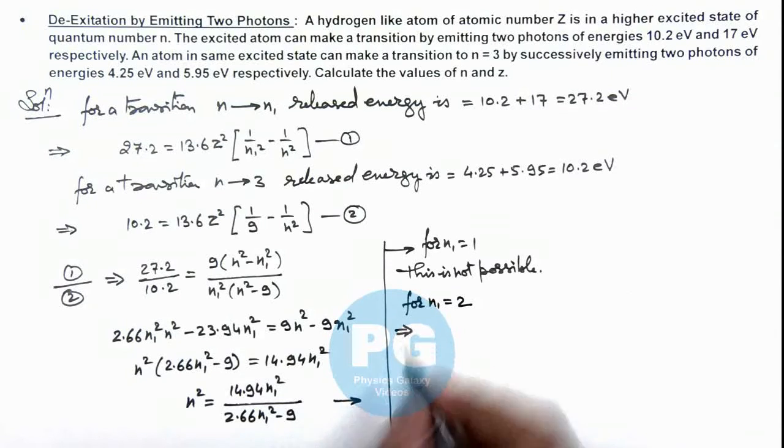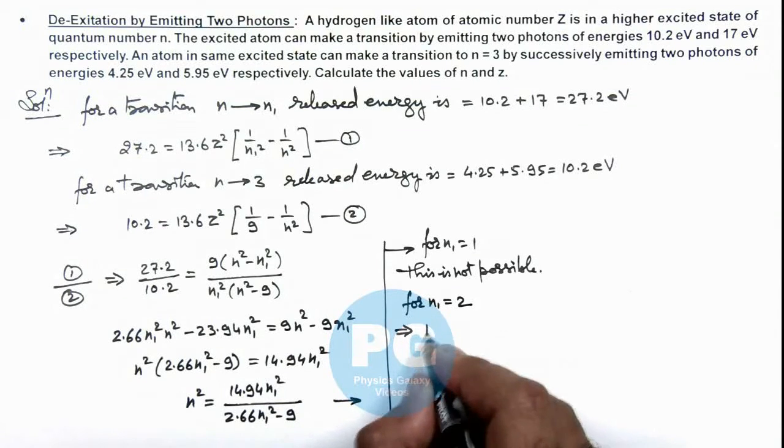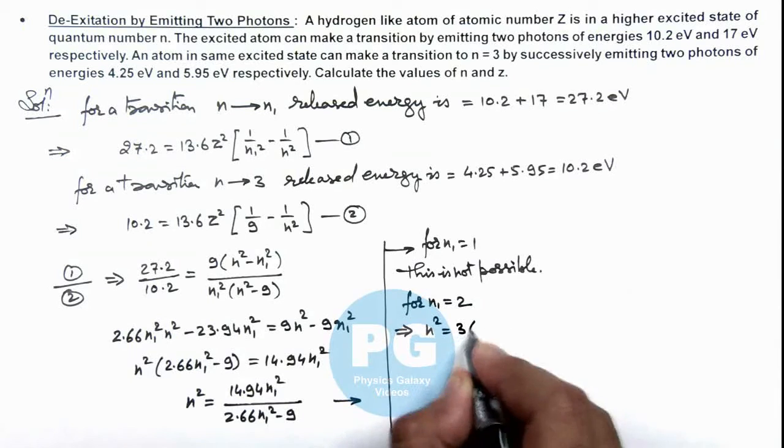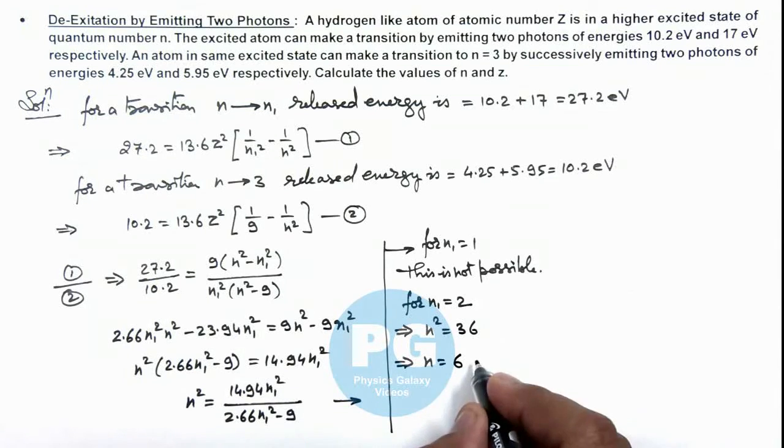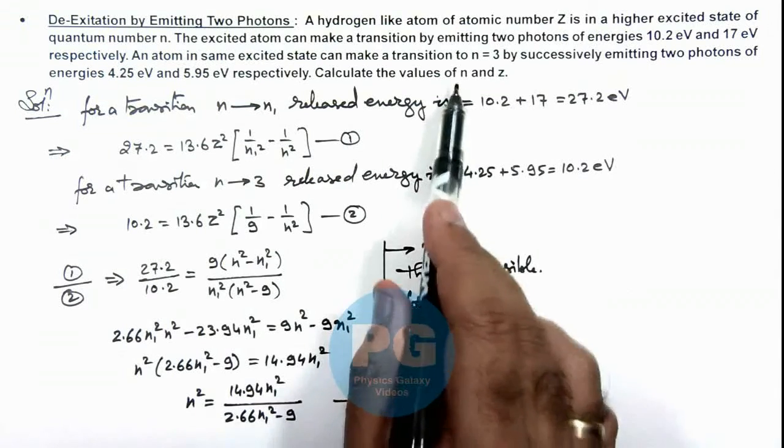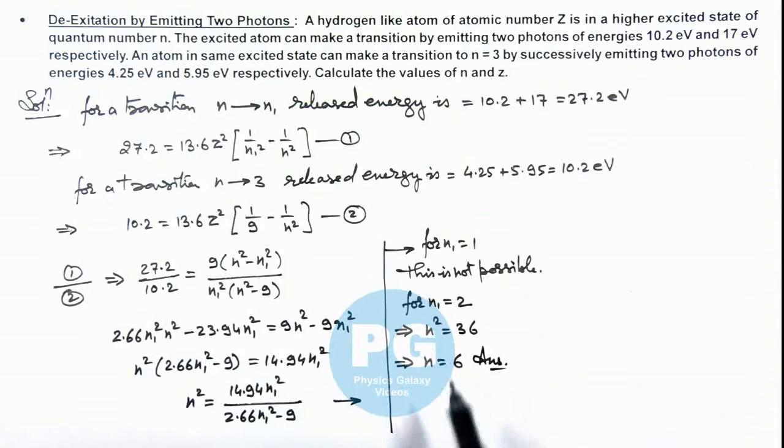this implies on simplifying this relation we get n square is equal to 36, which results the value of n is equal to 6. And this is the result of this problem for the value of excited state n to which the atom was initially excited. So for n equal to 6 now we can use equation 1.